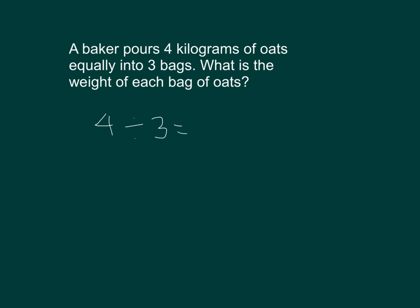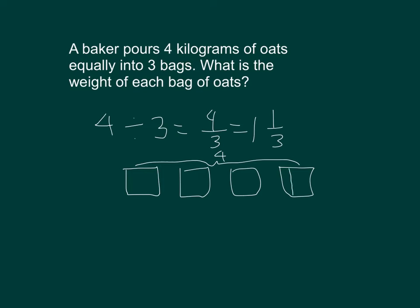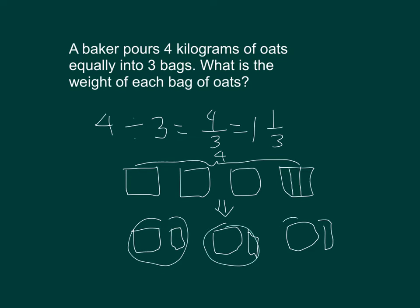4 divided by 3 is equal to 4 thirds, which equals 1 and 1 third. Looking at the pictures, I have 4 holes and that last hole I can divide into 3 parts because I'm dividing it into 3. 4 divided by 3, so that I have 1 and 1 third in each. 1 and 1 third also equals 4 thirds.